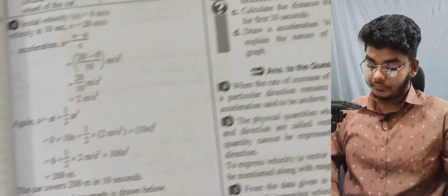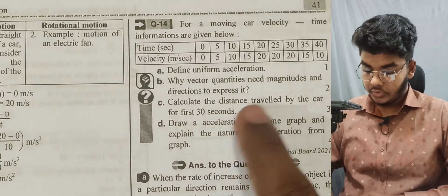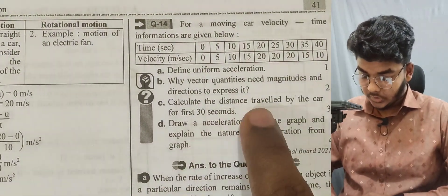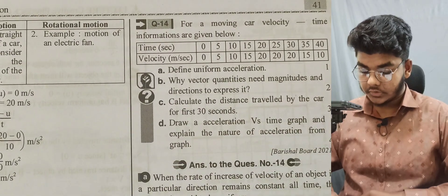Question 14 about a moving car: calculate the distance traveled by the car in the first 30 seconds and draw an acceleration-time graph to show the nature of motion.